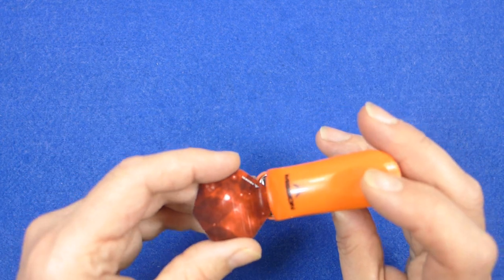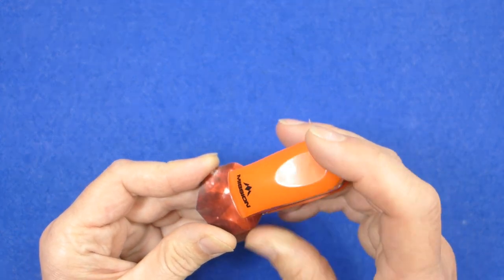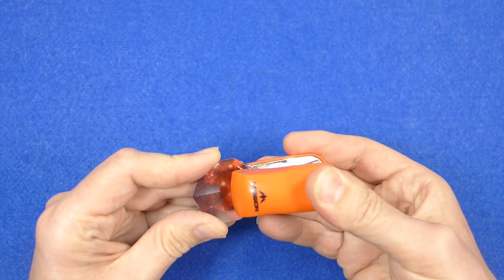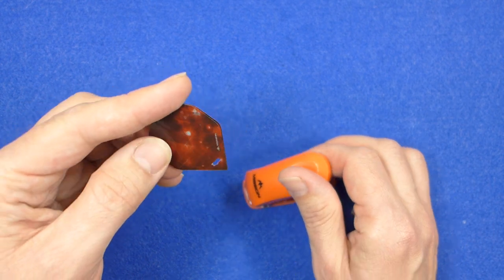And all you do is you just put the flight in there. Make sure it's steady and then you just press down and then it leaves a little slot.